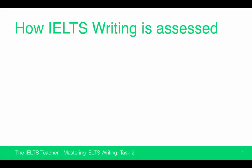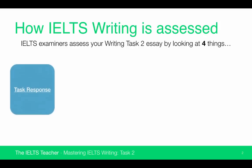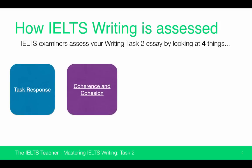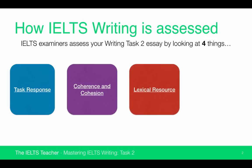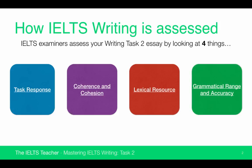It's not like the reading and the listening where you complete your test paper and you get answers right or you get answers wrong. Writing and speaking are quite different. There are four categories of assessment — the band descriptors. Those four categories are: task response, coherence and cohesion, lexical resource, and grammatical range and accuracy.